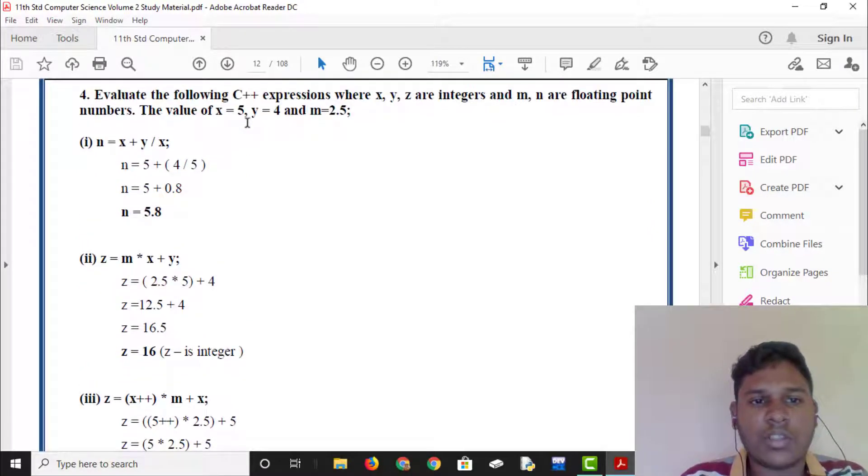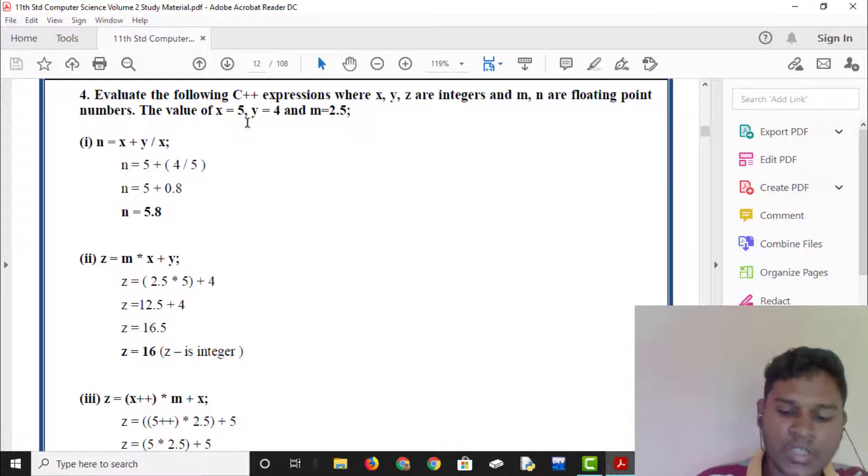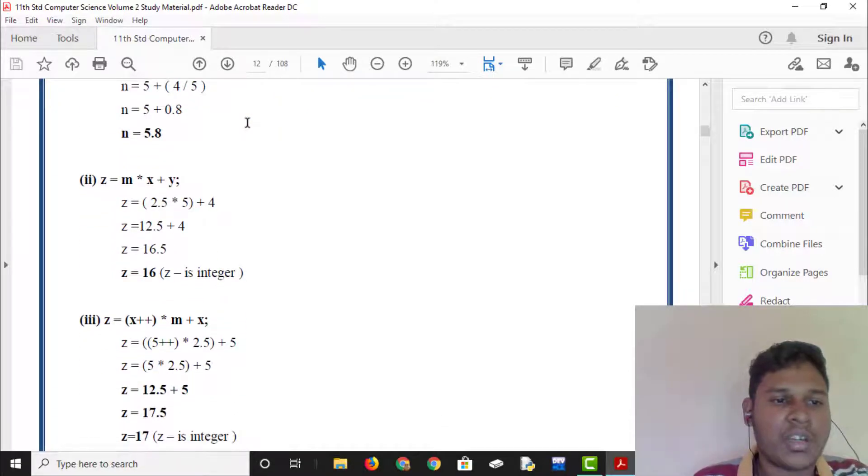Evaluate the following C++ expressions where x, y, z, r are integers and m is a floating point number. The value of x, y and m: x is equal to 5, y is equal to 4, m is equal to 2.5. r is equal to m plus y. r is equal to 2.5 plus 4 is equal to 6.5. This is the integer.